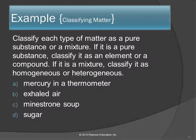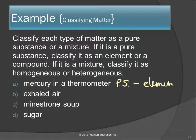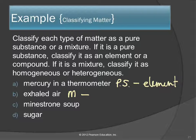Let's classify some things as pure substances or mixtures, and then go one step further to say element, compound, or homogeneous or heterogeneous mixture. Mercury in a thermometer — pure substance or mixture? Pure substance. Is it an element or a compound? It's an element — mercury was on that list of elements to memorize. How about exhaled air? That's a mixture. Is it homogeneous or heterogeneous? Well, if you're blowing chunks it's heterogeneous, but if you're just exhaling it's going to be pretty uniform — homogeneous.